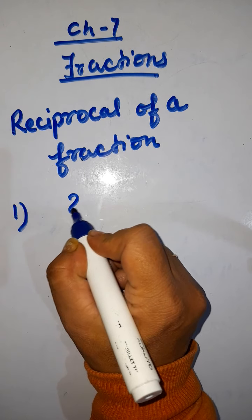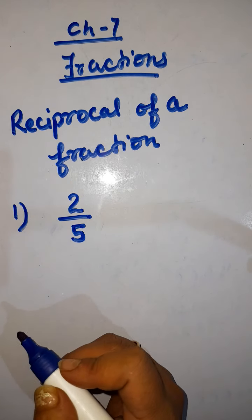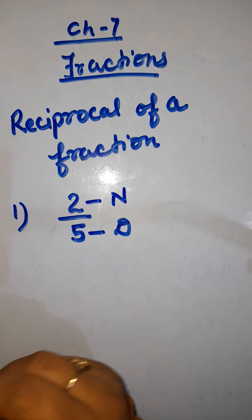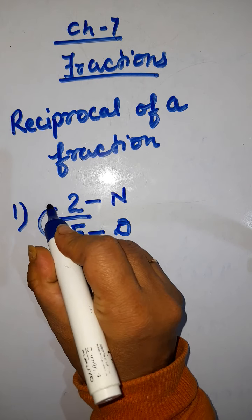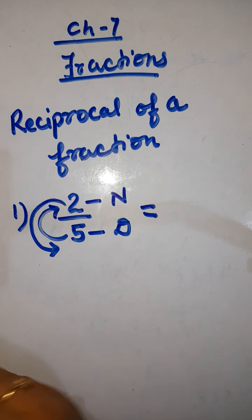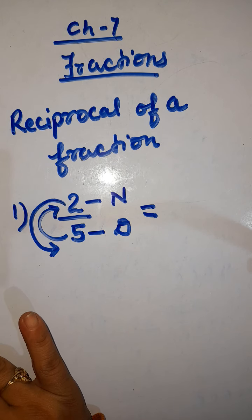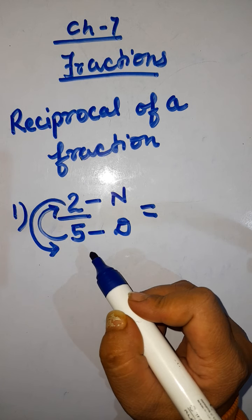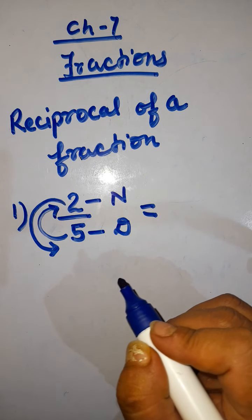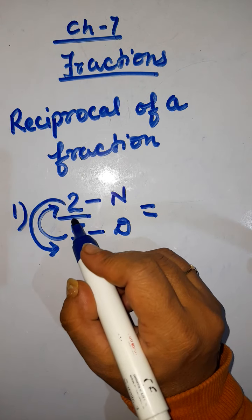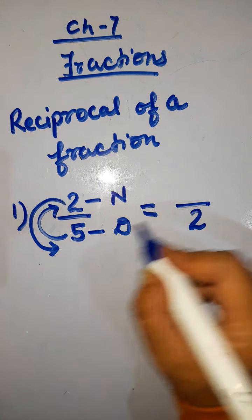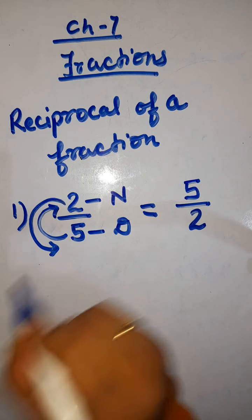We have the number 2 out of 5. Now we have to find out its reciprocal. Here 2 is the numerator and 5 is the denominator. It's very easy — we will just interchange the numbers for the reciprocal. No solving method is required; you just interchange the numerator and denominator. So the numerator 2 will become the denominator, and 5 will become the numerator.